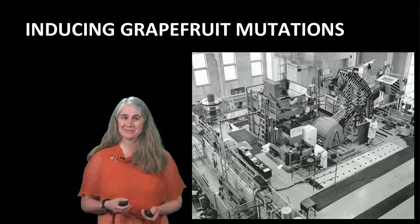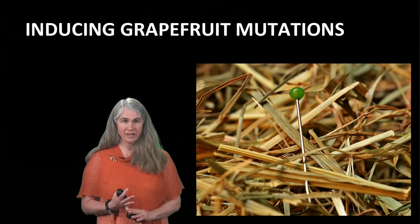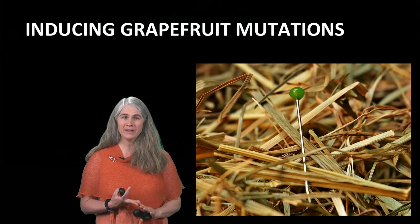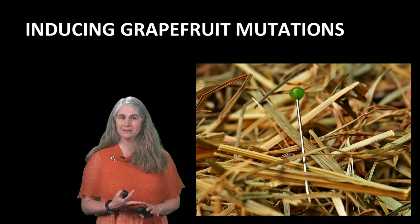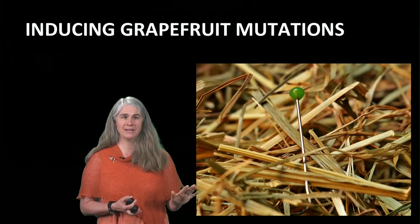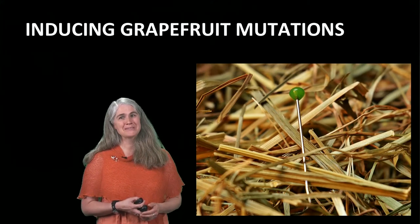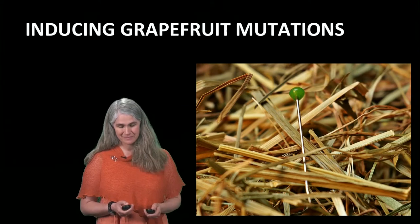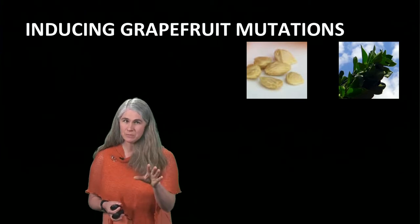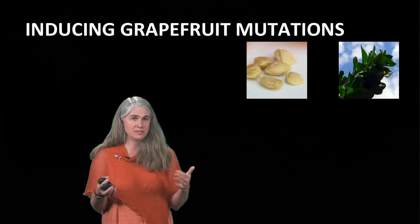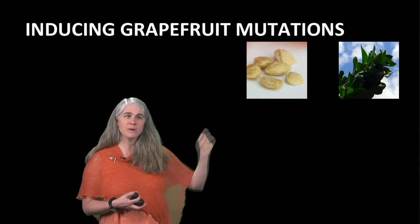But the rest of the process is definitely not fast. Remember, most mutations have no effect or are negative. So finding a positive one, like red color, is a little bit like looking for a needle in a haystack. Scientists had to screen many, many plants in order to see if they had new desirable traits. The type of plant tissue used is important because the gene has to be passed to the next generation for it to be an allele that plant breeders can work with — that's why they used seeds.